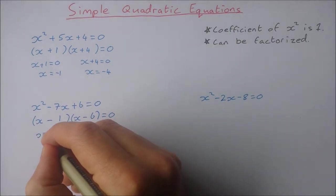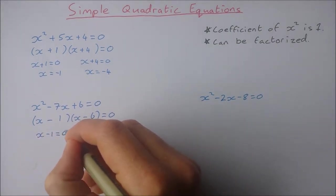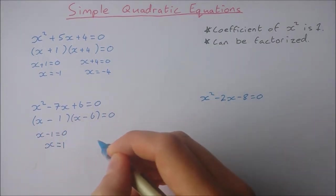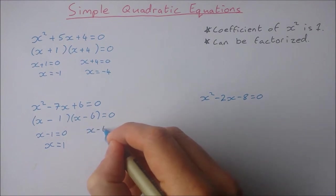So that means x minus one is equal to zero, so x is equal to one. And x minus six is equal to zero, so x is equal to six.